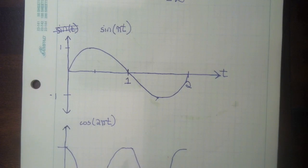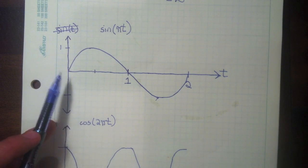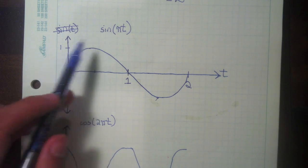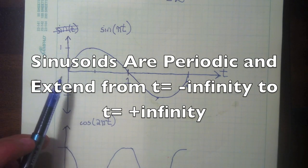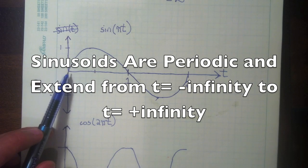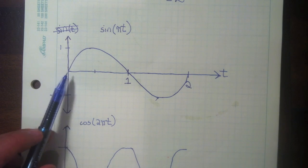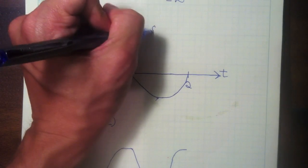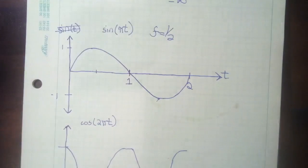So a sine function is simply just a wave-like function that moves like this. This has a period of one half, which means the frequency is one half, sorry, the period then is two.